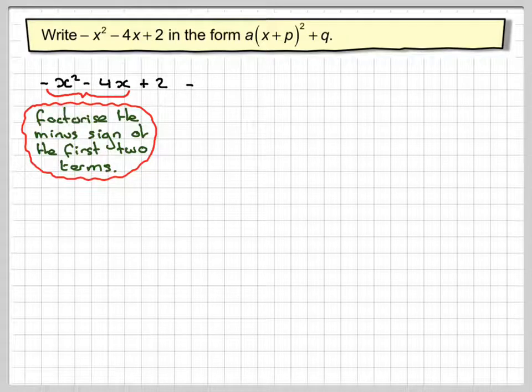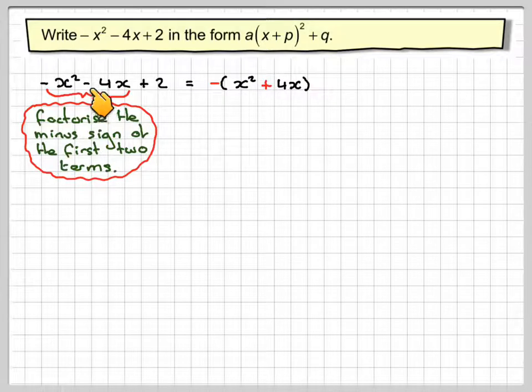So we're actually factorizing out minus 1. So bracket minus and then we're going to have x². But we have to change the sign here to be plus.